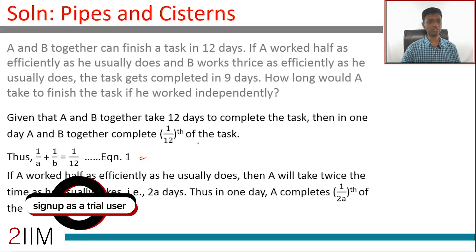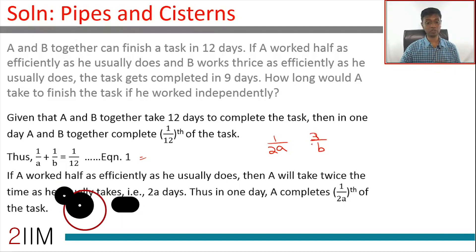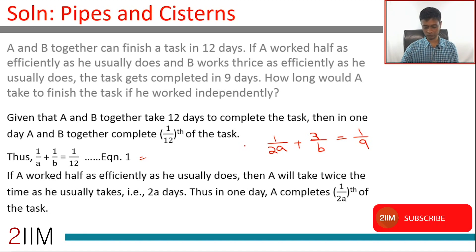Now if A worked half as efficiently as he usually does, that means A would do only half the work, half of 1/a, or it is 1/2a. B works thrice as efficiently as he usually does, so B would do 1/b every day thrice as efficiently, so B would do 3/b. Then the task gets completed in 9 days, or in one day they would do 1/2a + 3/b = 1/9. They finish 1/9th of the task in a day.